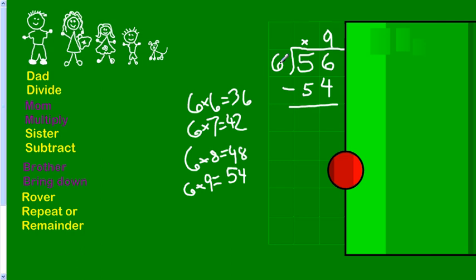So, divide. Dad. 56 divided by 6? 9. Mom says multiply to check. 9 times 6? 54. Sister says subtract. 56 minus 54? That's 2. Now, you might say, hey, I'm done. 9 remainder 2.